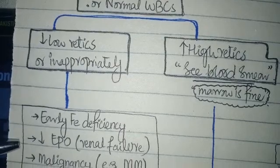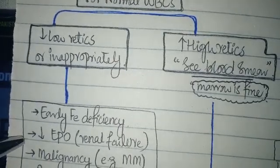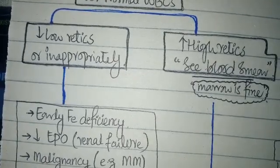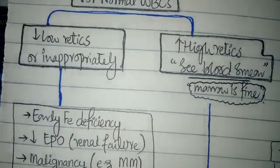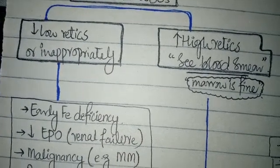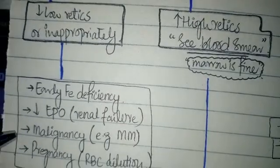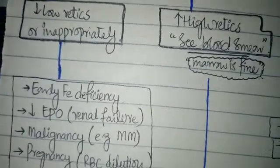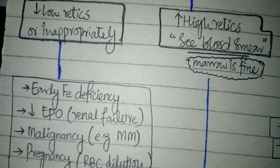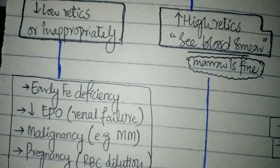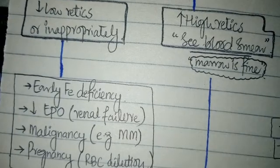Another cause is low erythropoietin production. This can be due to renal failure or renal destruction of the cells that produce erythropoietin. It can also be due to malignancy, for example multiple myeloma, in which many different kinds of cells are produced and which can lower the reticulocyte count from what can normally be produced by the bone marrow.